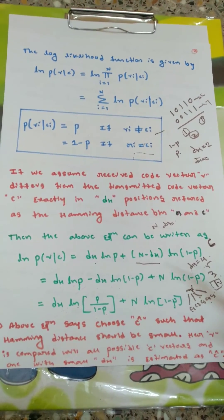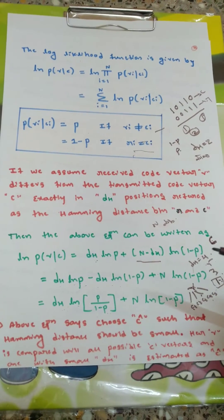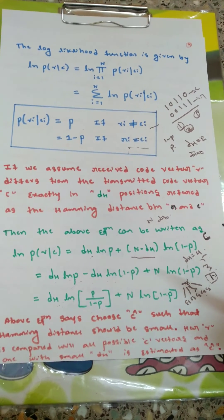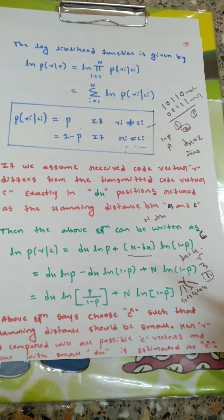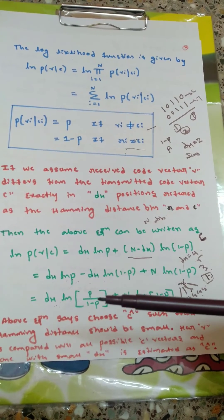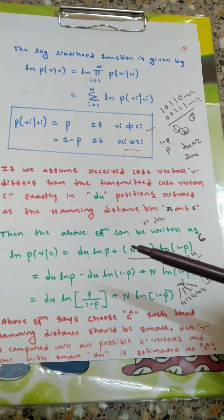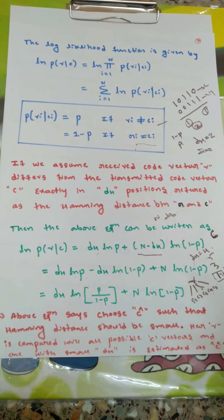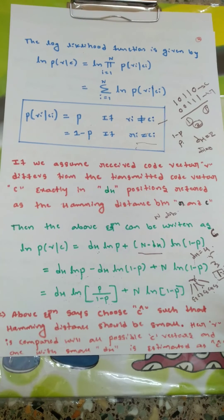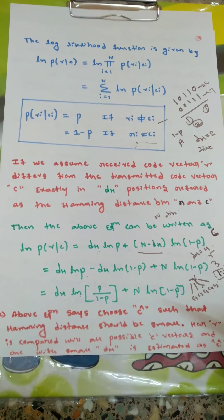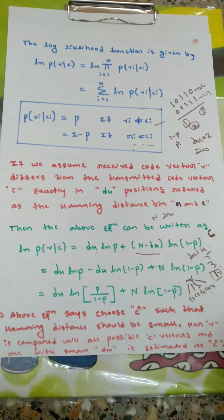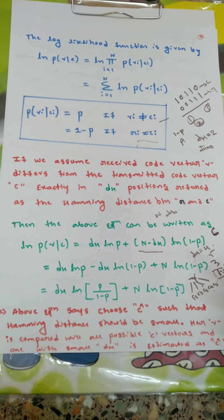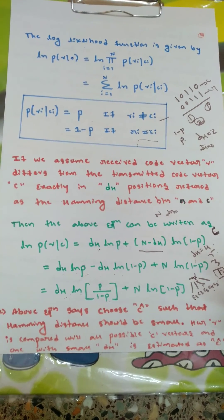In summary, maximum likelihood decoding creates an estimate c-cap such that the transmitted data is recovered correctly at the receiver side by minimizing Hamming distance. That's all about the maximum likelihood decoding function. In the next video, I will explain MLD with a worked example. Stay tuned, thank you for your support, please subscribe the channel for more updates.